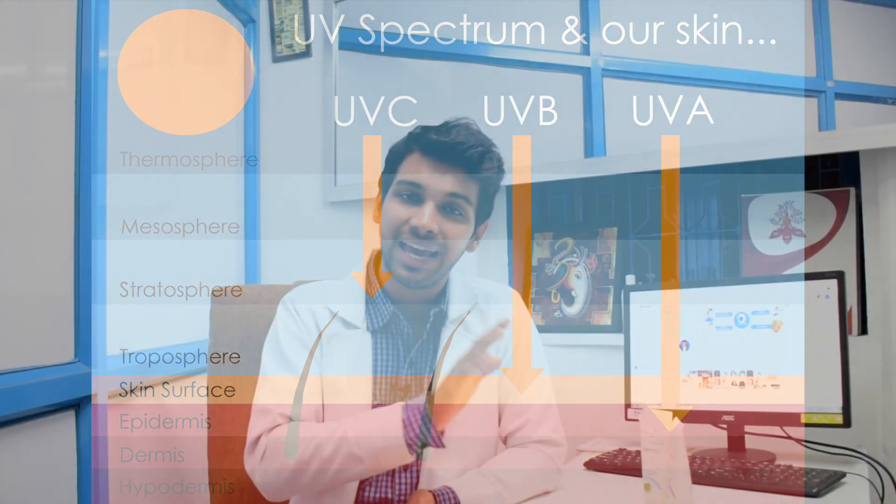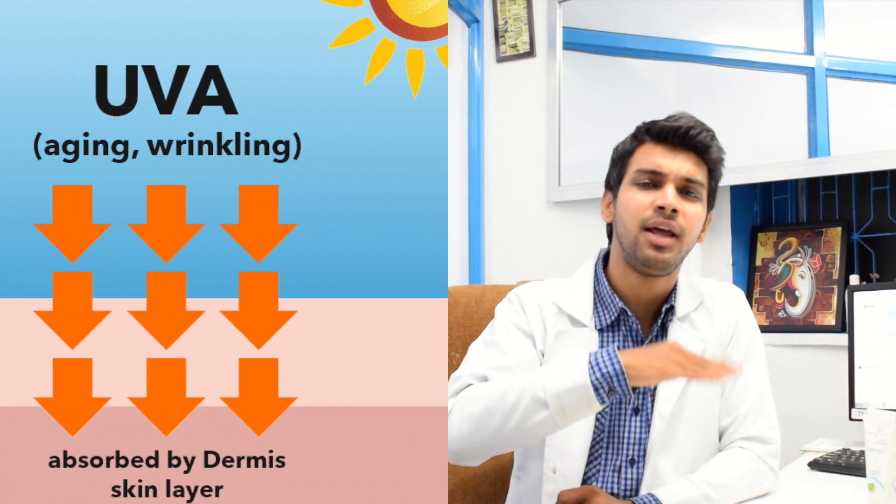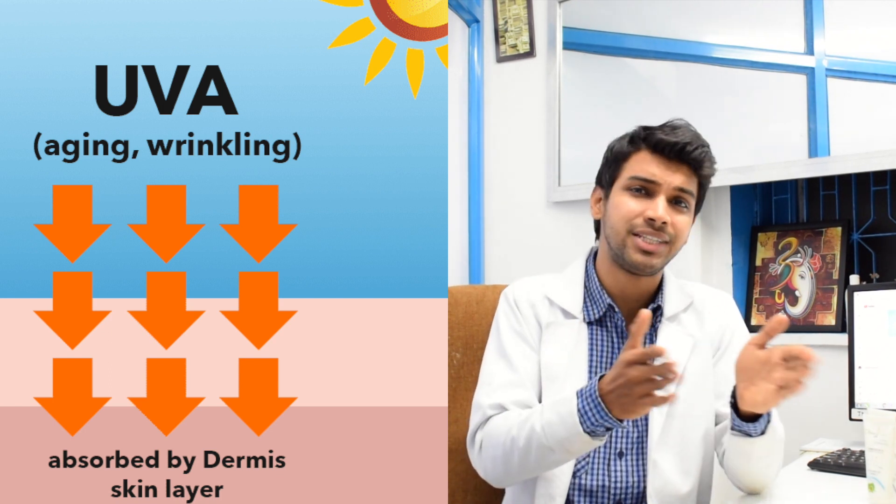UV-C ऐसे sun rays हैं जो पृथ्वी के atmosphere में block होते हैं, ये हमारे skin तक नहीं पहुँचते तो इसका कोई भी नुकसान नहीं होता। UV-A rays ऐसे long rays होते हैं जो हमारी dermis layer - यानी skin की deep layer - तक पहुँचकर नुकसान करते हैं। Skin की anatomy में epidermis, dermis और subcutaneous layers होती हैं। UV-A rays dermis layer तक पहुँचकर premature aging, loose skin, wrinkles, sunspots जैसे नुकसान करते हैं।